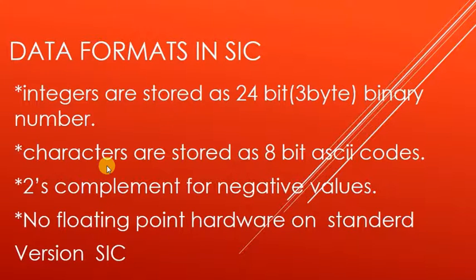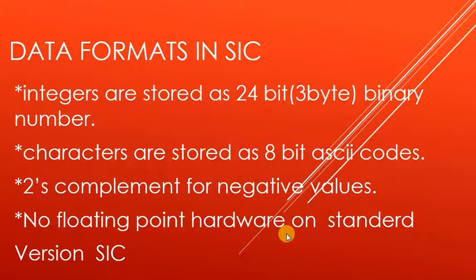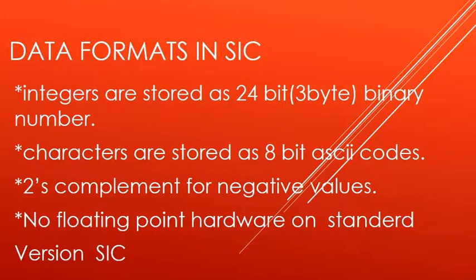Now we will see how characters are stored in SIC. Characters are stored as 8-bit ASCII codes. We know that for every character there is a corresponding ASCII code, and that ASCII code is saved in the SIC model as an 8-bit binary number. So a character takes 8 bits, that is 1 byte of memory, in a standard SIC.